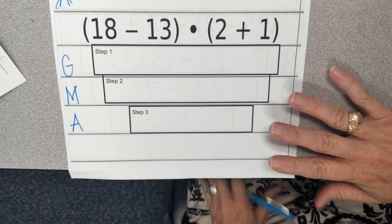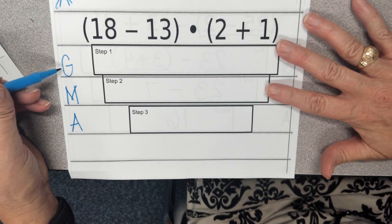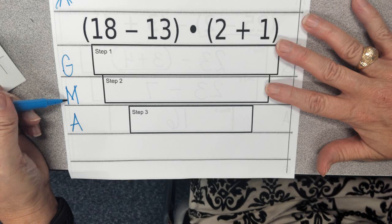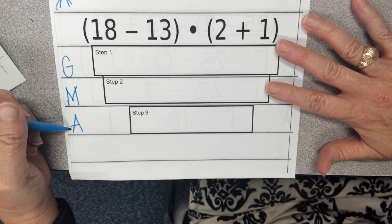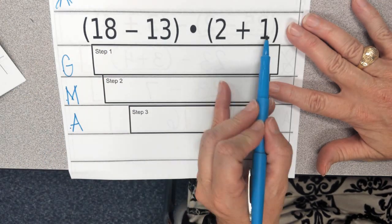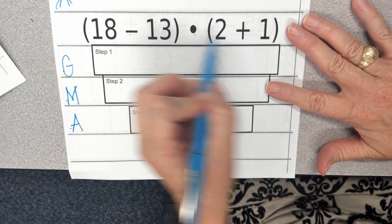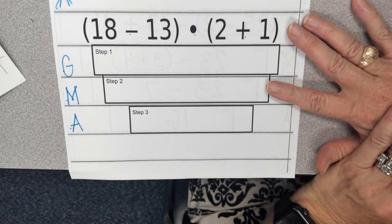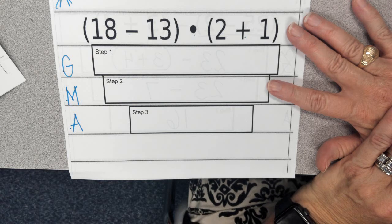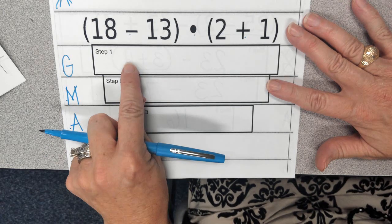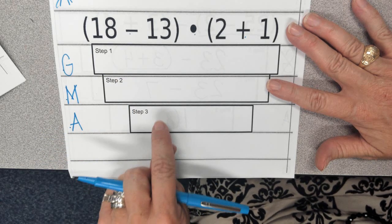All right, so when you make your plan, you're thinking about your grouping symbols, multiplicative actions, and additive actions. So, as I look at this problem, I see 1, 2, 3 actions that are going to be taking place in this expression, which is why I will be completing 3 different steps.